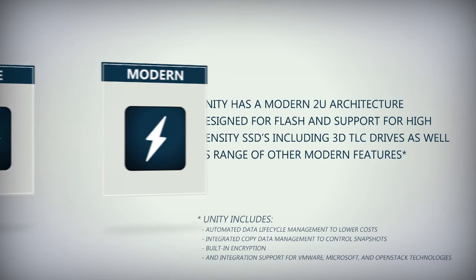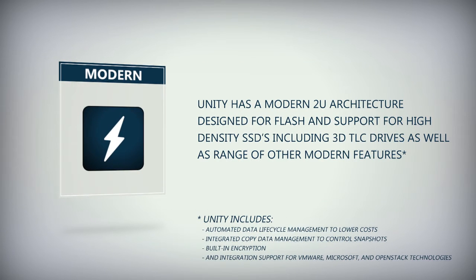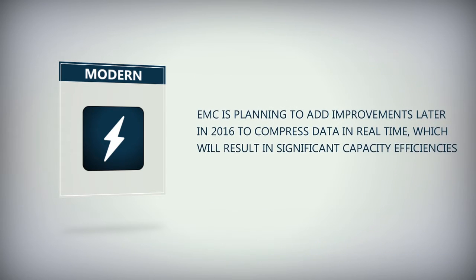Unity is modern. Unity has a modern 2U architecture designed for flash and support for high-density SSDs, including 3D TLC drives, as well as a range of other modern features. In addition, EMC is planning to add improvements later in 2016 to compress data in real-time, which will result in significant capacity efficiencies.